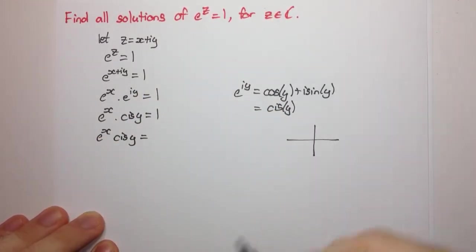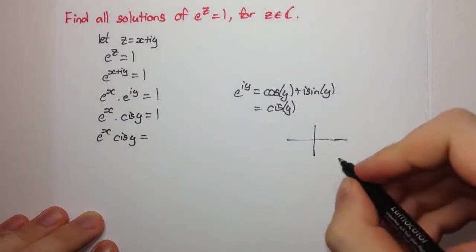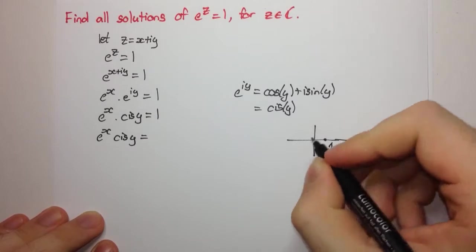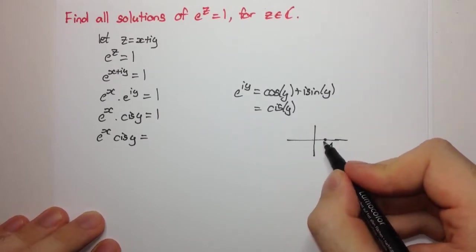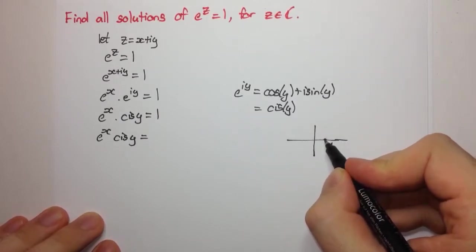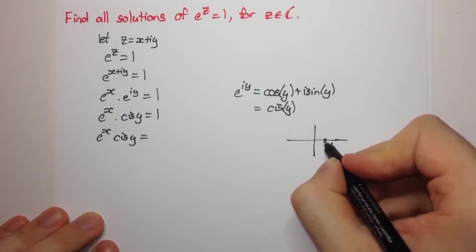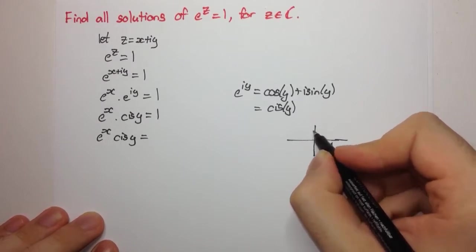On the Argand diagram, or the complex plane, we have our complex number 1 here. Now, clearly the argument is 0, but that's not the only way of writing 1. We can also go around 2π, and that would still give us 1. We can go around another 2π, that would also give us 1.